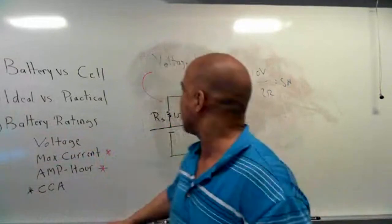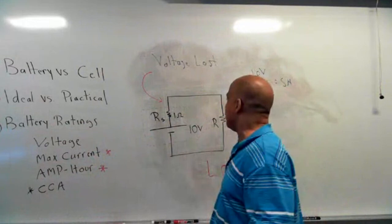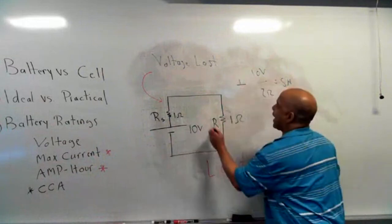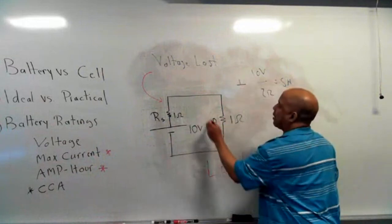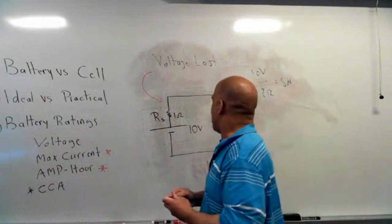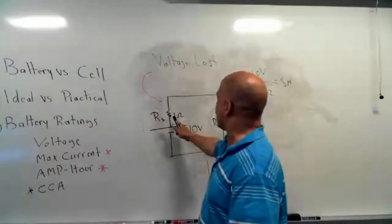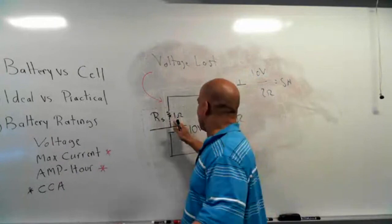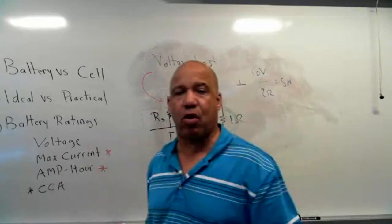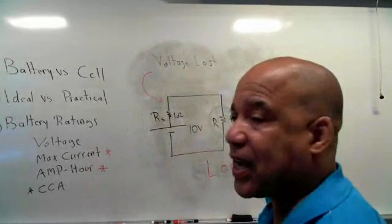That's called a practical voltage source. To manage this, you try to limit how small you make the load. If you limit how small the load is, you limit the current draw, and you have more control over how much voltage you're losing inside the battery.